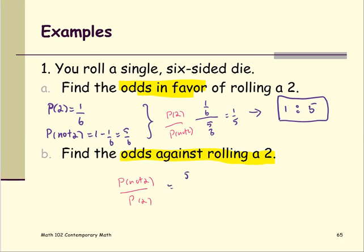And the way to set up is the same way, 5 over 6 divided by 1 over 6, which is 5 over 1. And then write it in the ratio form as 5 to 1 for the odds against rolling a number 2.